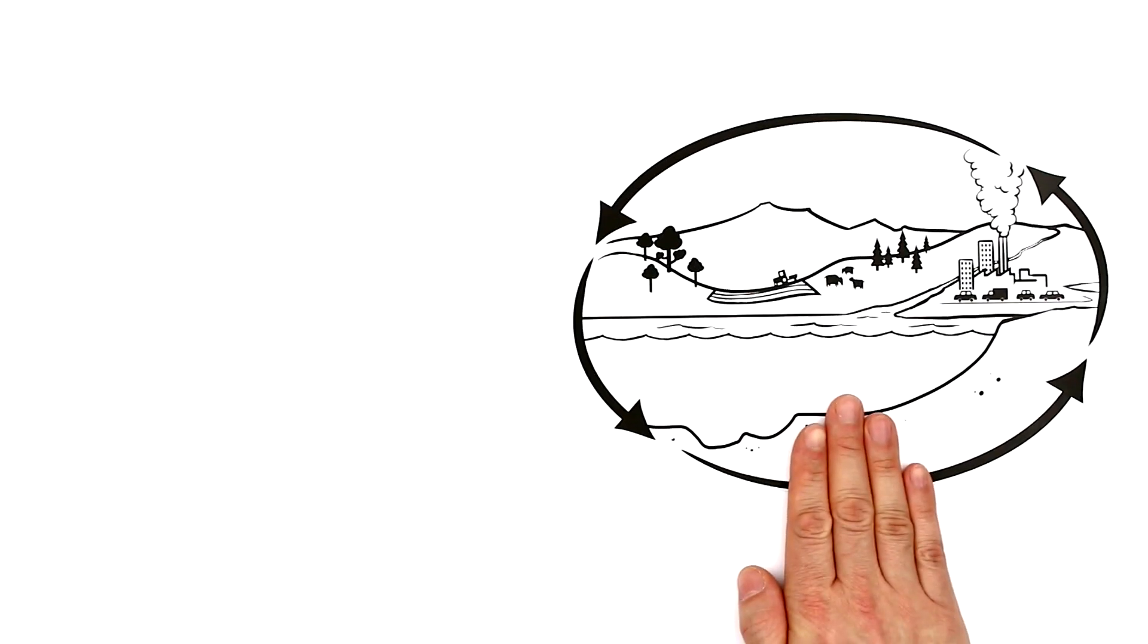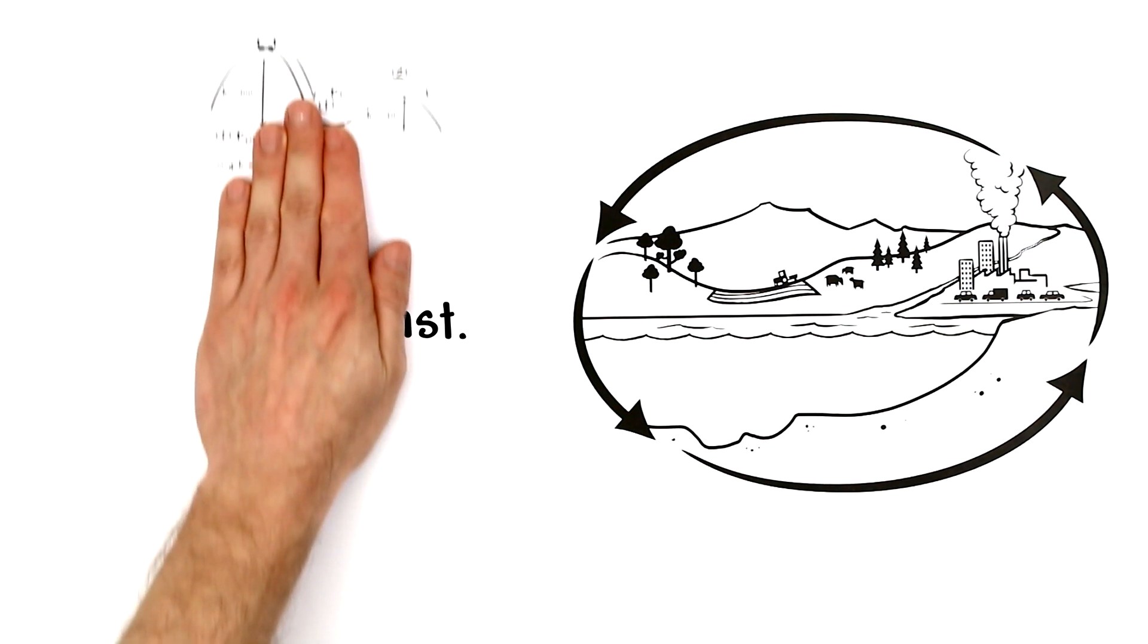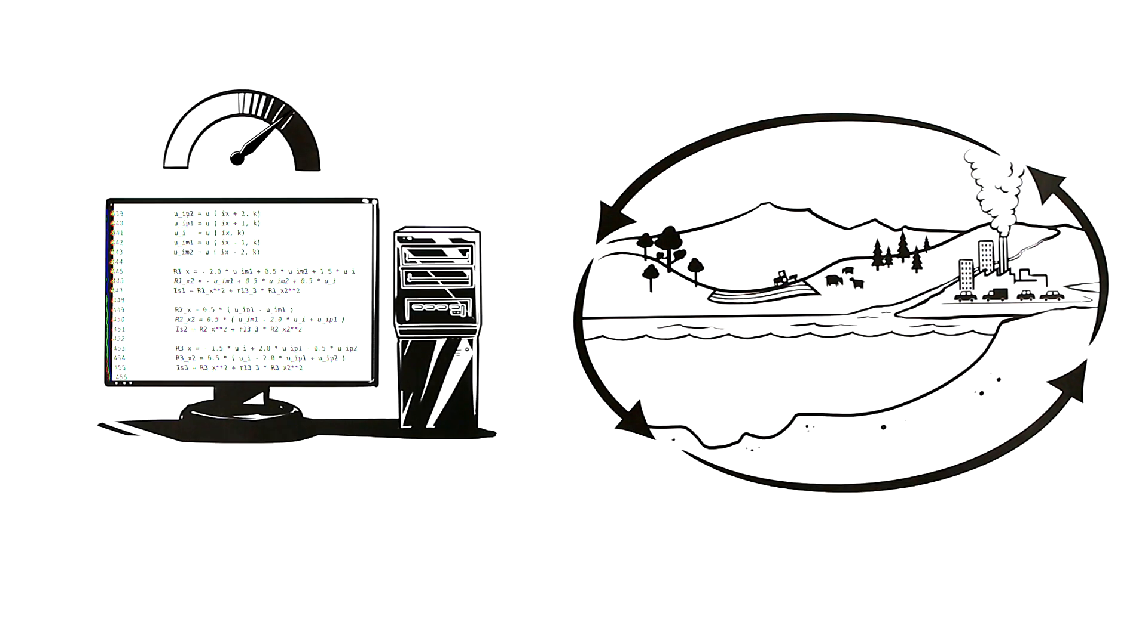The climate is subject to the known laws of physics, like for example the law of conservation of energy. These laws are formulated as complex mathematical equations. To be able to calculate them, they have to be reformulated for powerful computers.